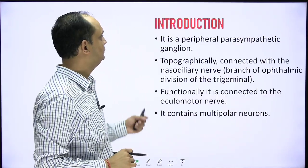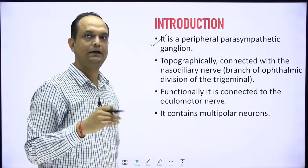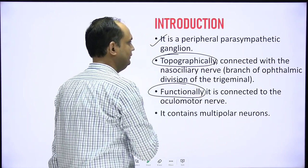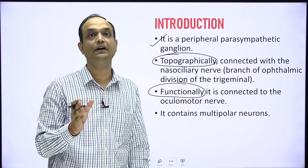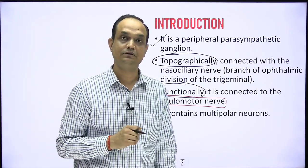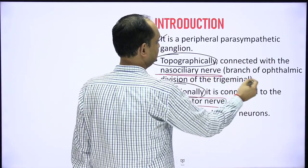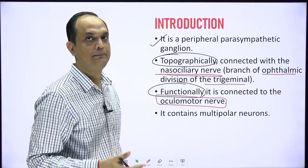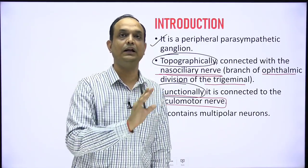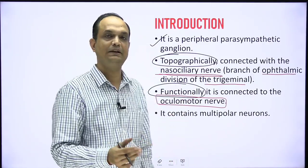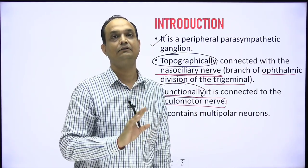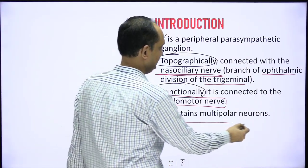The ciliary ganglia is a peripheral parasympathetic ganglia related to the third cranial nerve. In any parasympathetic ganglia there are two key concepts: topographic relation and functional relation. The ciliary ganglia is functionally related to the oculomotor nerve (third cranial nerve), but topographically it is supported by the nasociliary nerve, which is a branch of the ophthalmic division of the trigeminal nerve. The oculomotor nerve carries pre-ganglionic fibers that relay in the ganglia, while the nasociliary nerve carries no parasympathetic fibers to the ganglia.